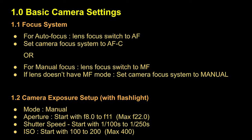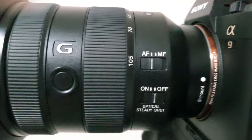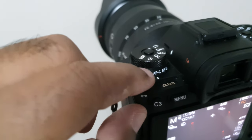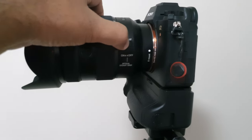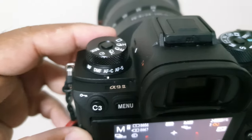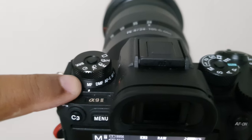Under basic camera settings, you need to select a focus system for macro photography. If you use the autofocus system, switch the lens focus mode to AF. If the lens doesn't have an AF mode, set your camera focus system to autofocus continuous mode. For manual focus, switch the lens focus mode to MF. If the lens doesn't have MF mode, set your camera to manual mode. For macro photography, I recommend manual focus mode.